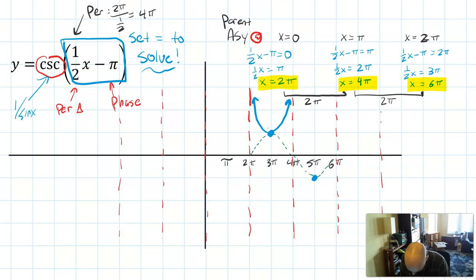Here's the min of the sine and the max, local max of the cosecant graph. And then I'm just going to continue the pattern because I now see what the pattern is. So we'll do down like this, up like this, down like this, do one more up like this.